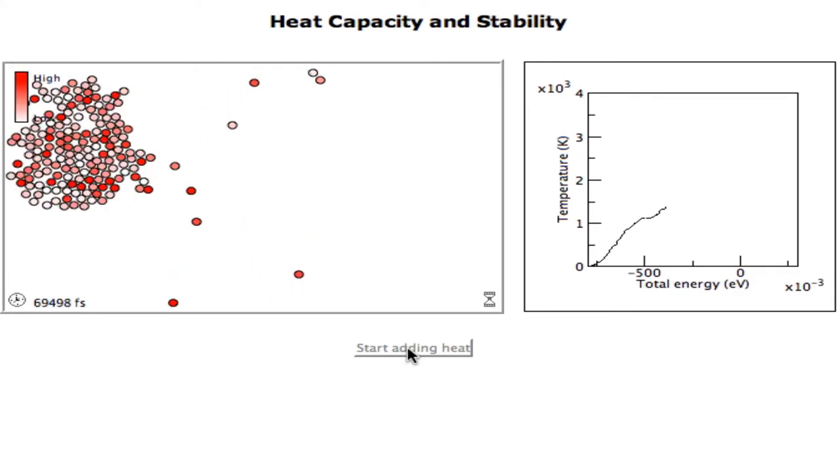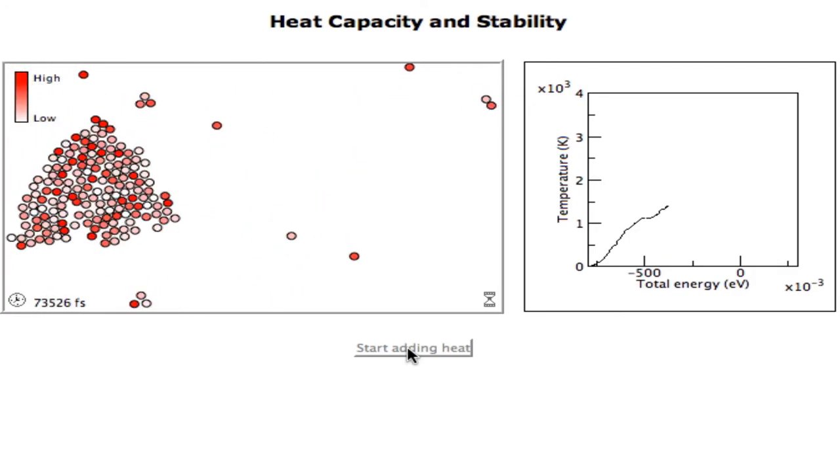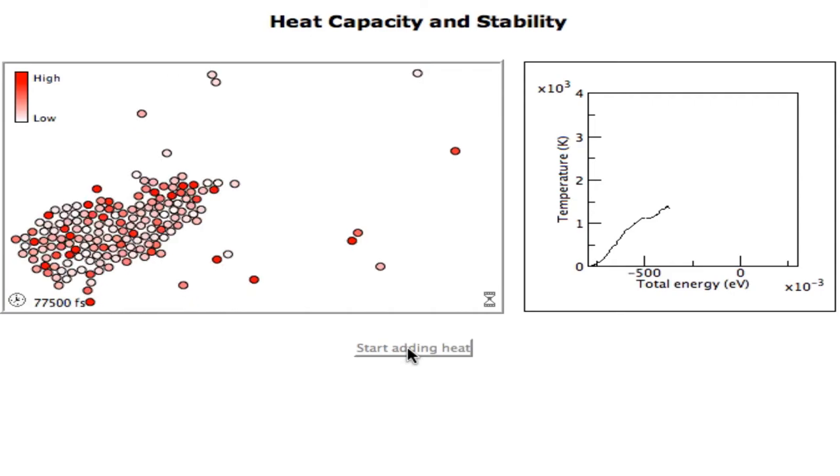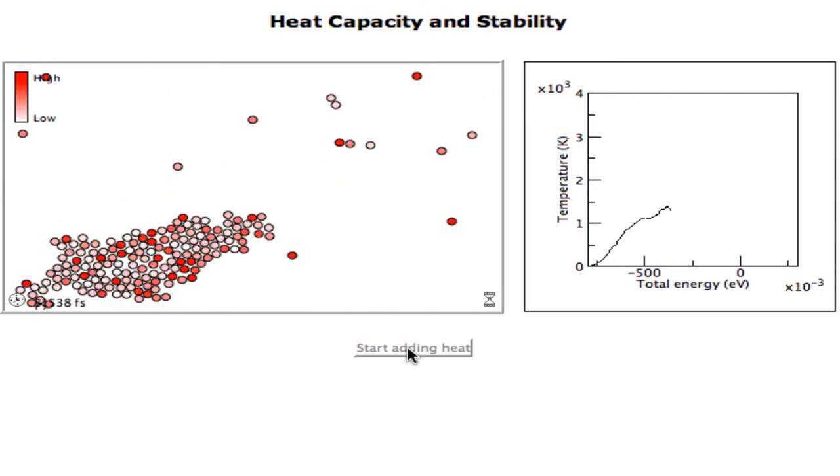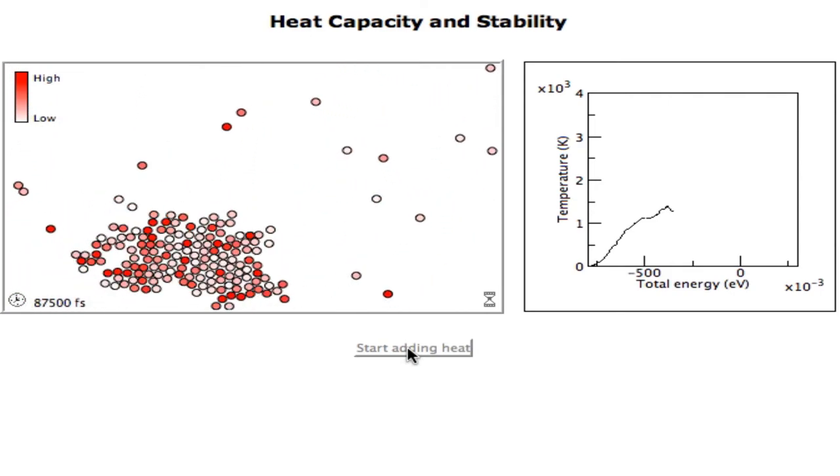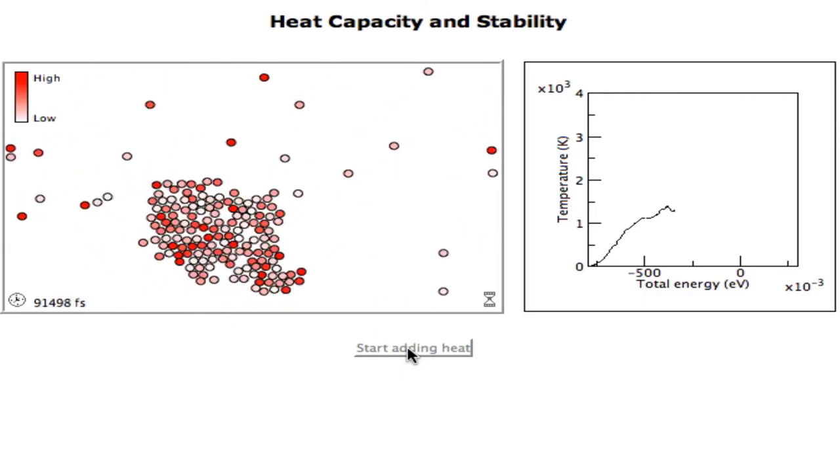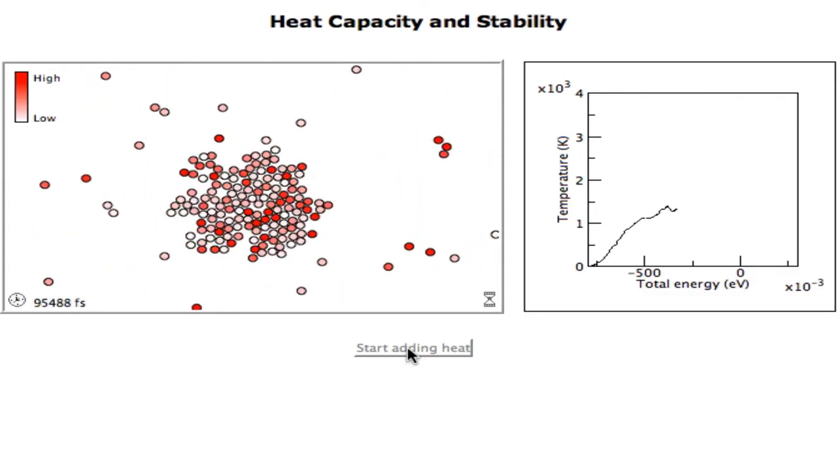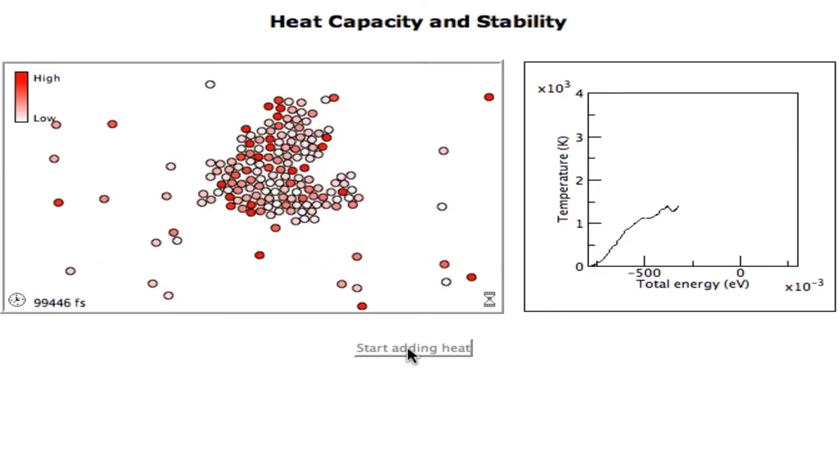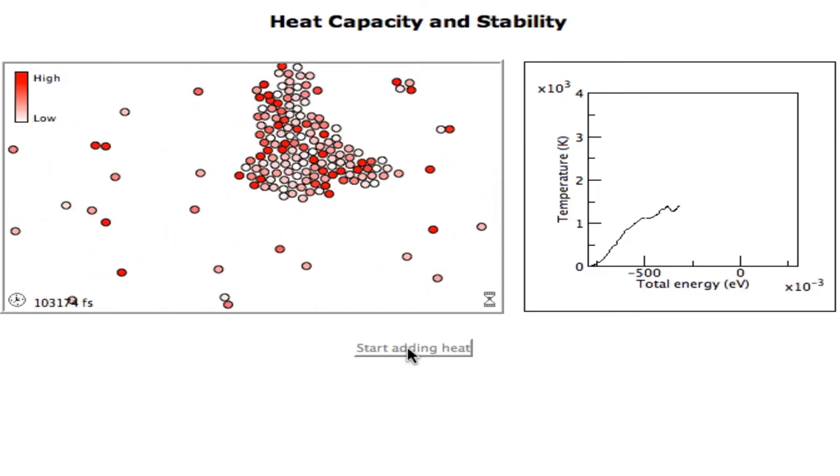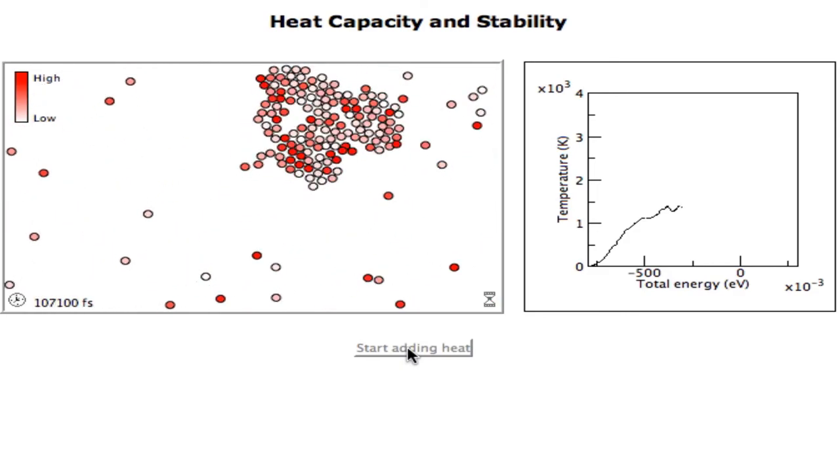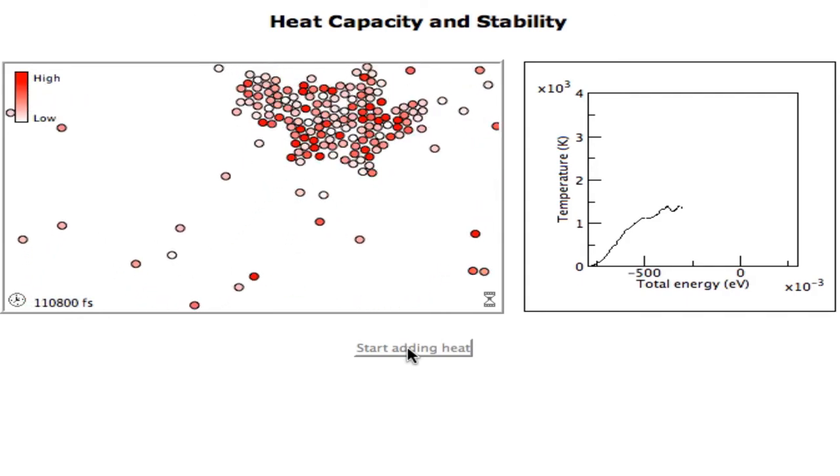That is because the heat I add is now being used to break bonds instead of increasing the temperature. You can see more and more bonds are being broken, you get free atoms or particles moving around, and the temperature is not changing or increasing nearly as much, even though I add heat.